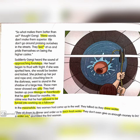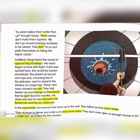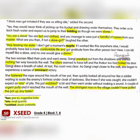Two women came up to the well and talked as they drew water. 'They sit down to dinner and order us to fetch fresh water. They don't give enough money to buy a water jug.' The first woman said she would go to bed rather than fetch water without money for a jug. 'I think men get irritated if they see us sitting idle,' added the second. 'Yes, they would never think of picking up the bucket and drawing water themselves. They order us to fetch fresh water and expect us to jump to their bidding as though we were slaves.'